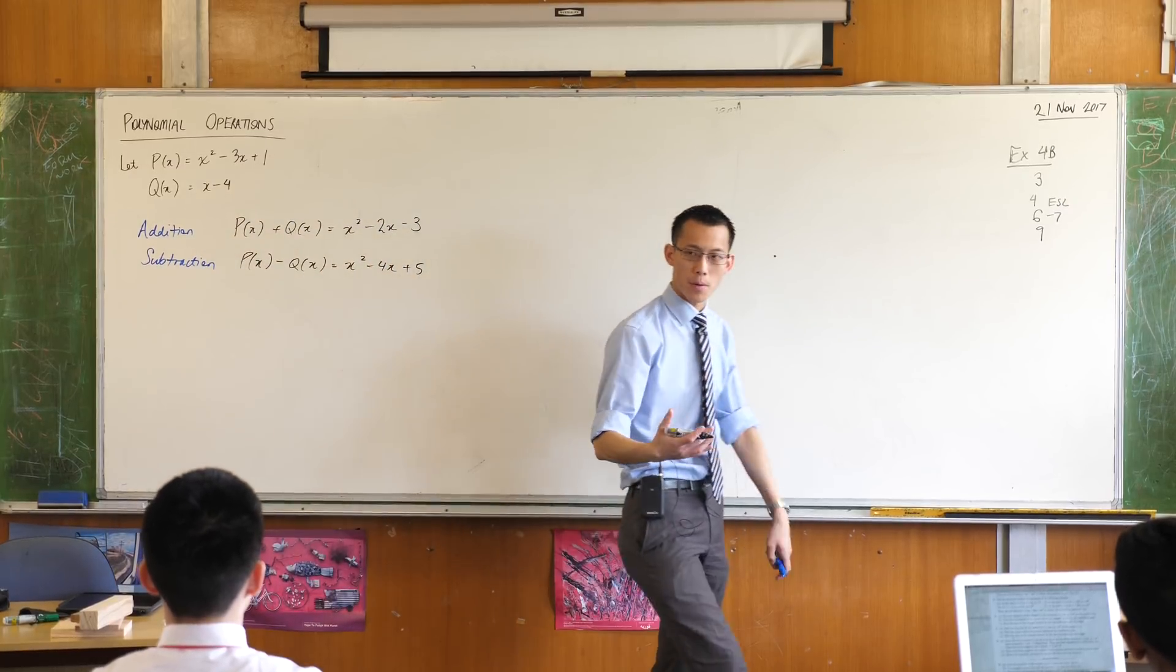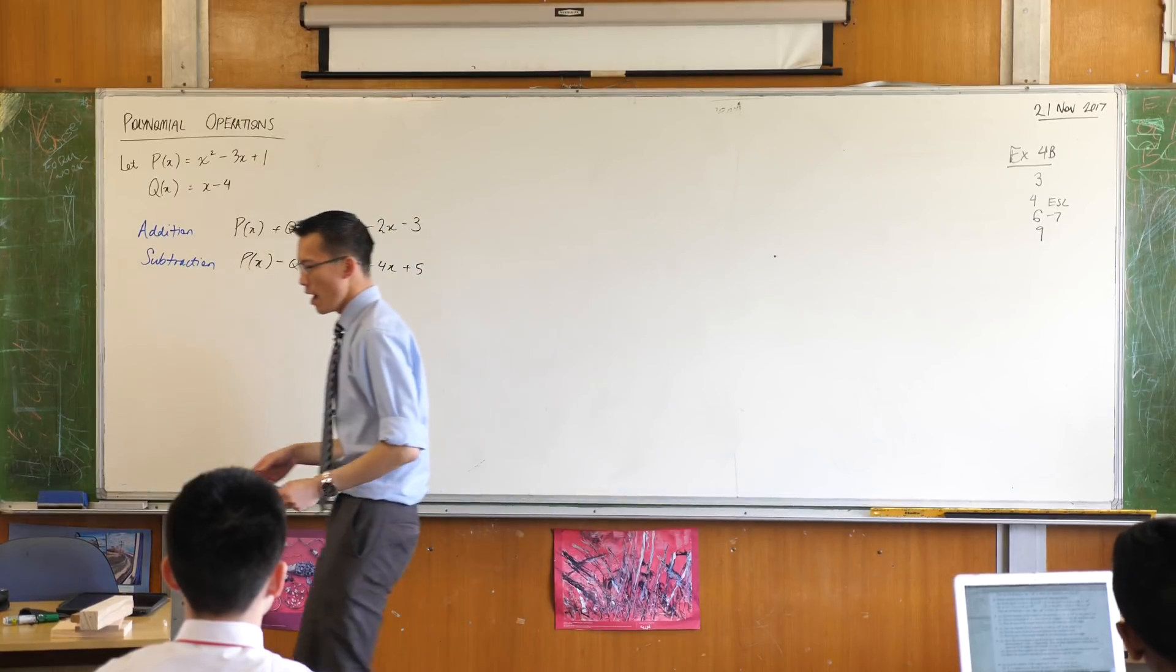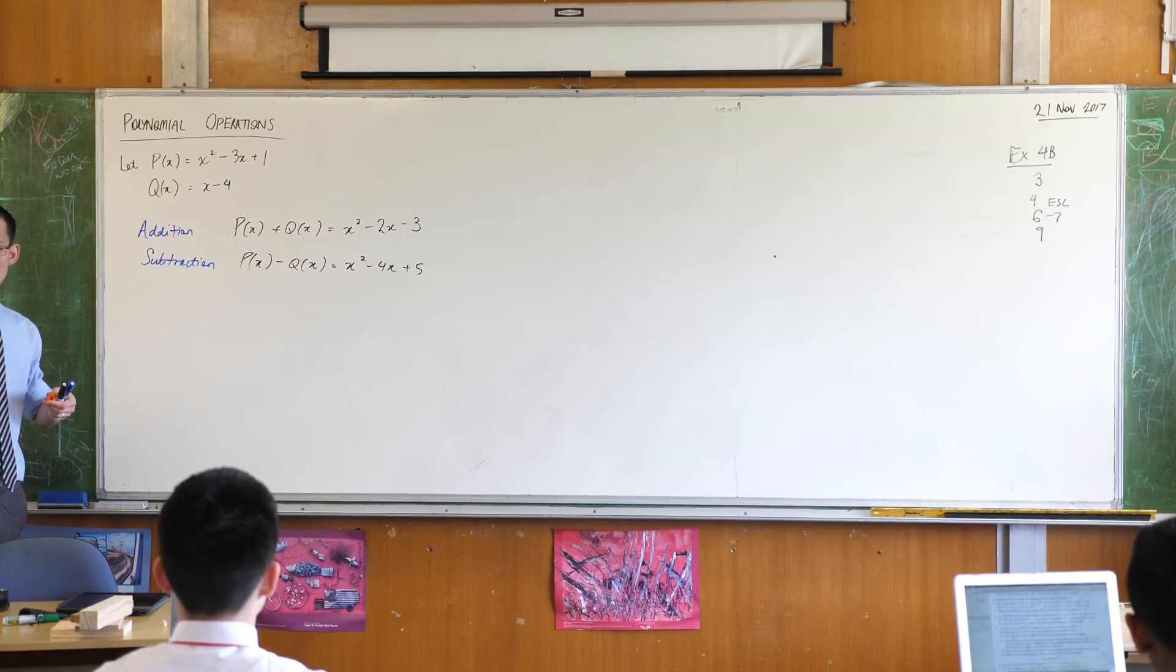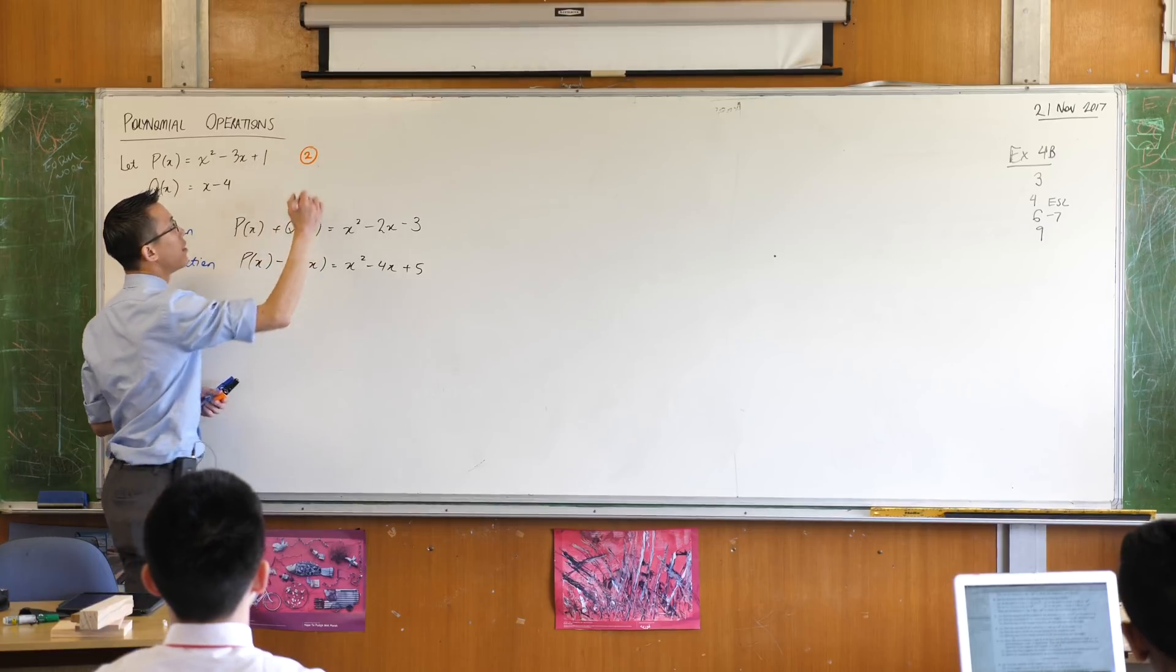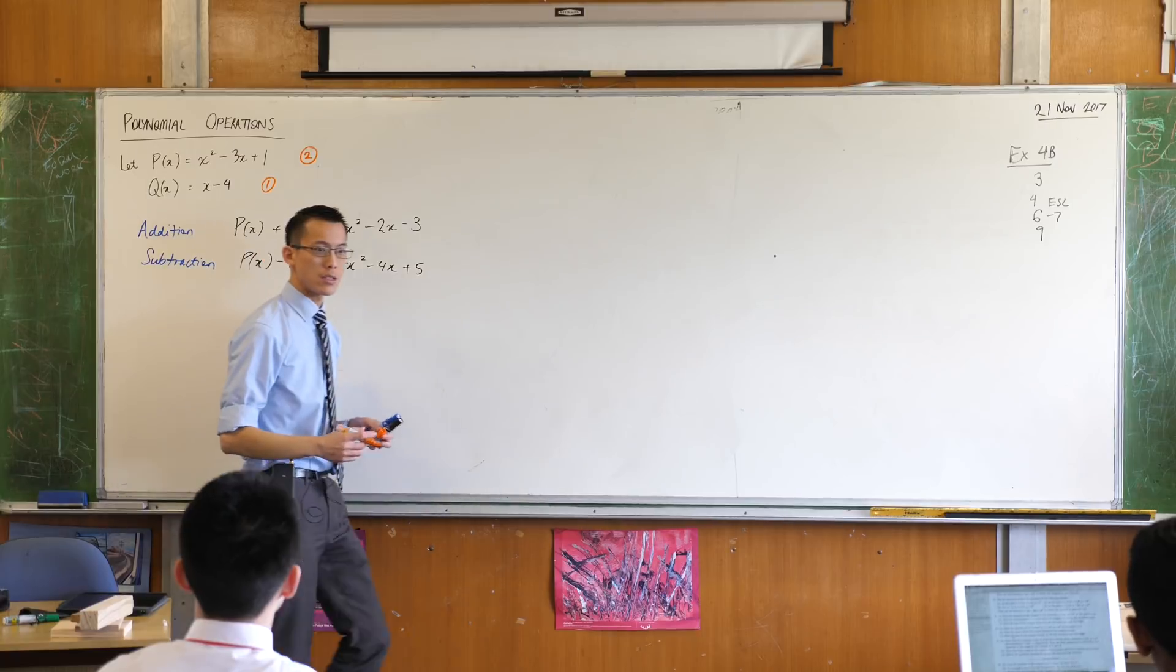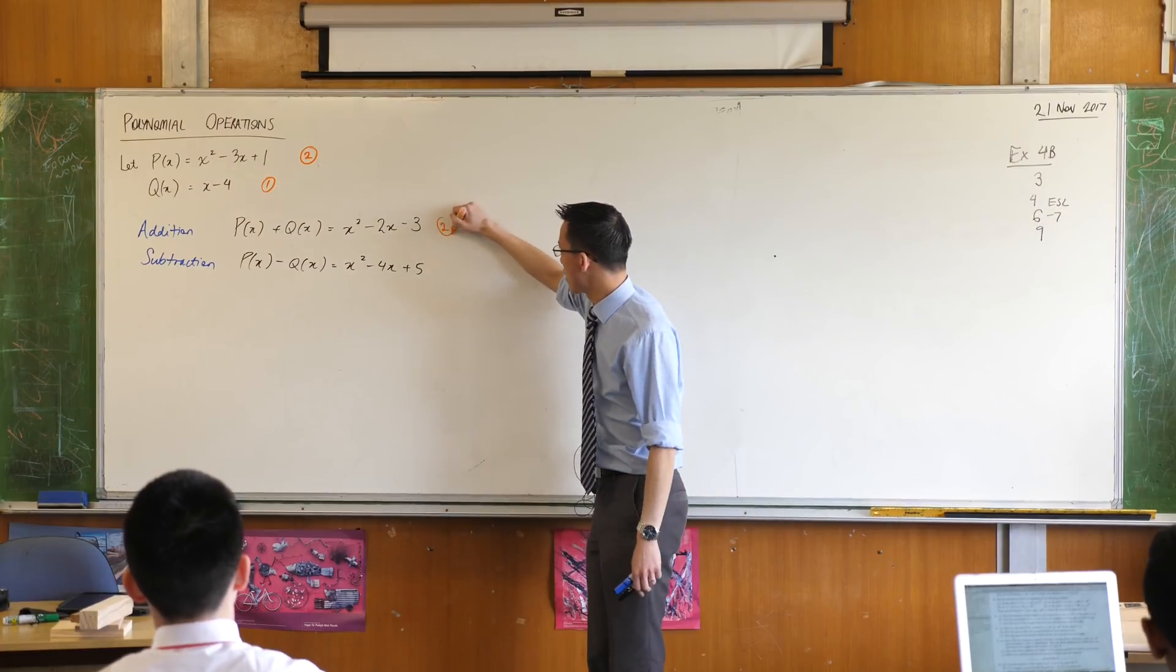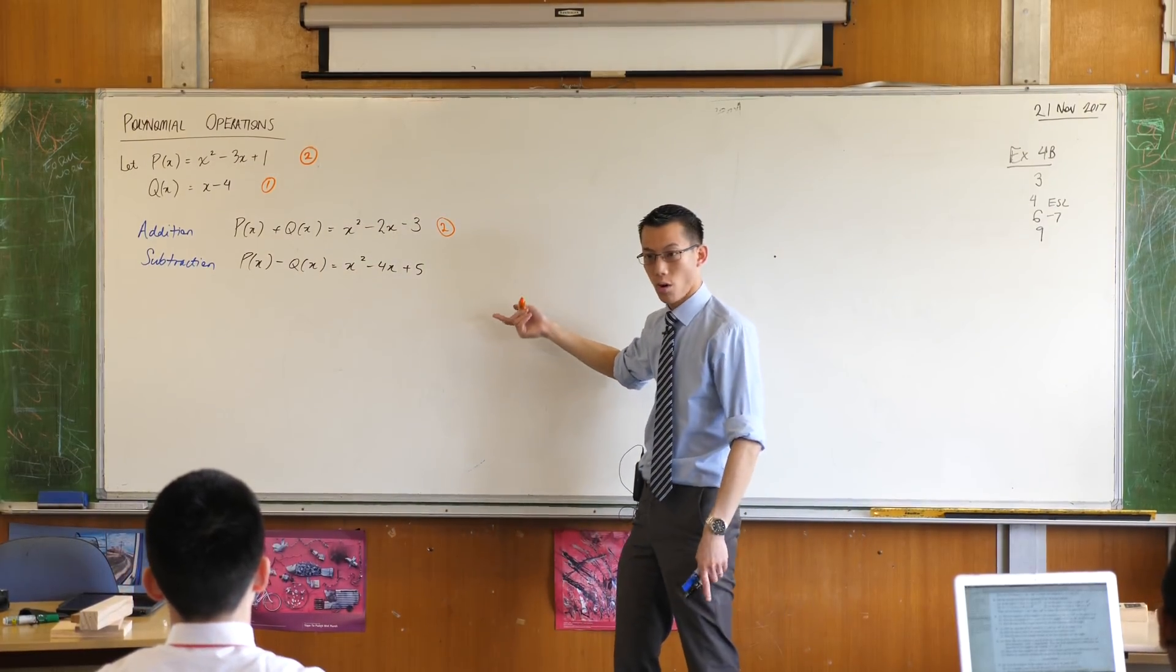Before we move on to the other operations, I want you to notice some things about the degrees here. Polynomials p and q, you can tell me what their degrees are pretty quickly, right? The degree of p is 2. The degree of q is 1. And now I want you to look at the degrees of the sums and differences. p plus q, what's its degree? 2. And p minus q, its degree, also 2.